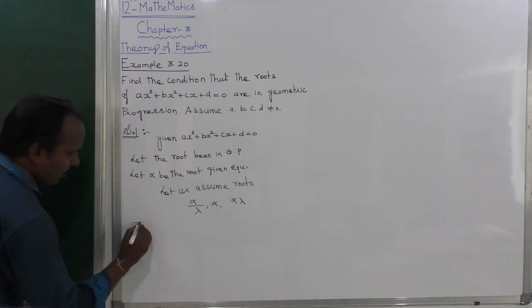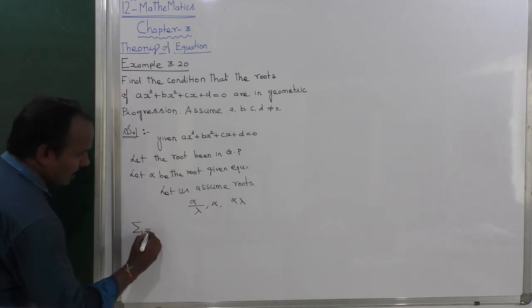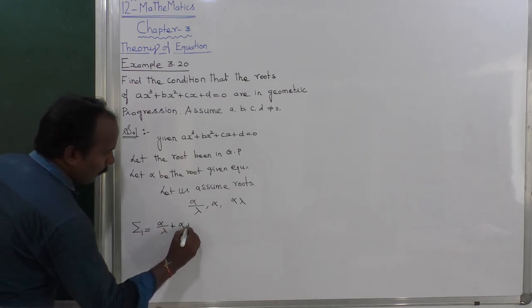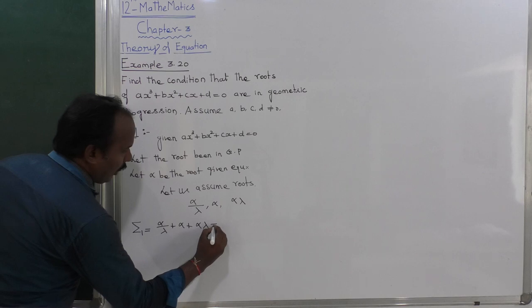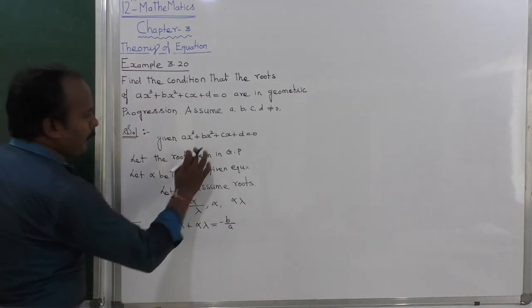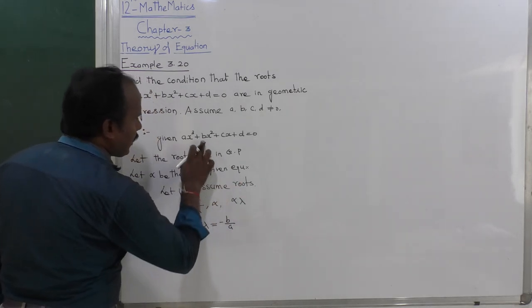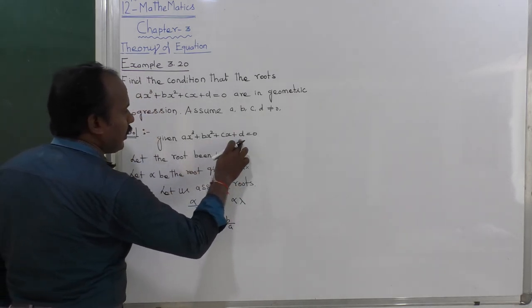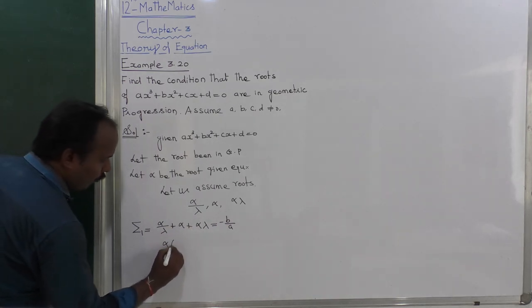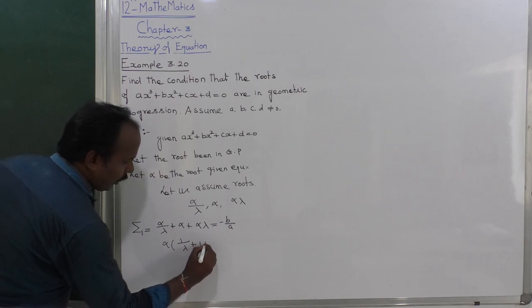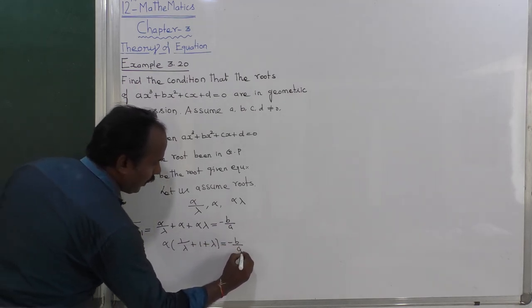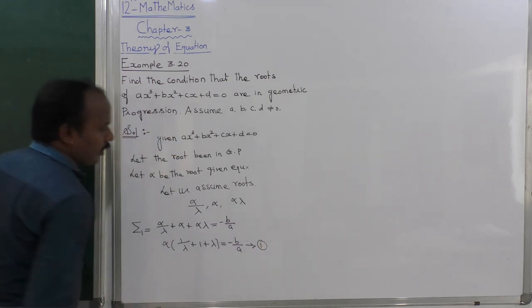First, find summation 1 (sum of roots). Σ1 = alpha/λ + alpha + alpha·λ = -B/A. Taking alpha as common: alpha × (1/λ + 1 + λ) = -B/A. This is equation number 1.